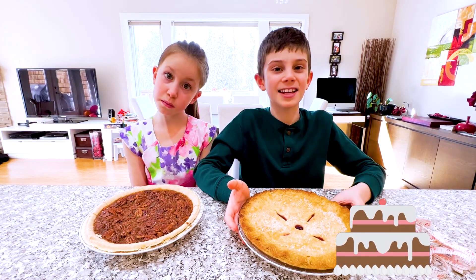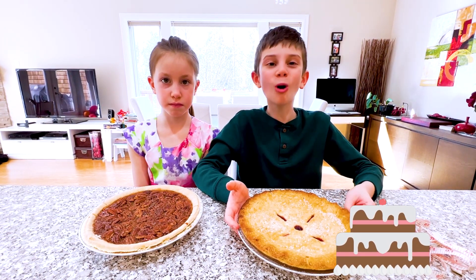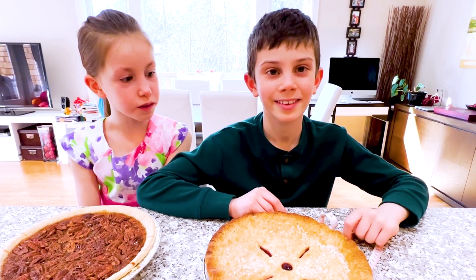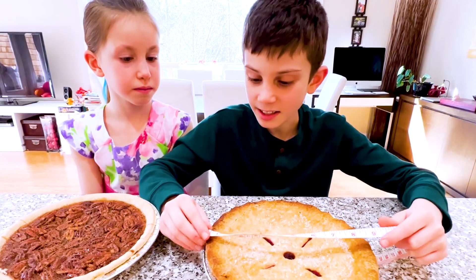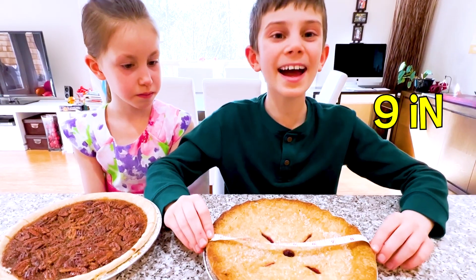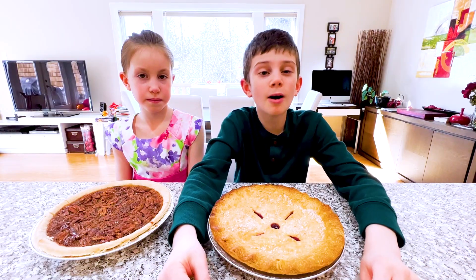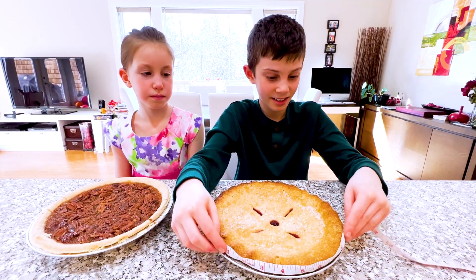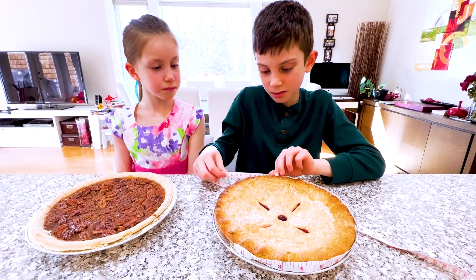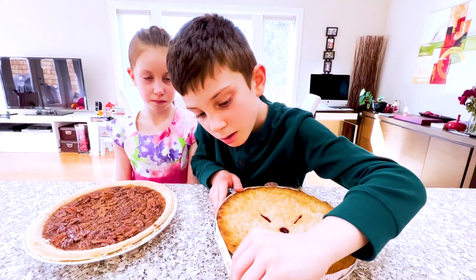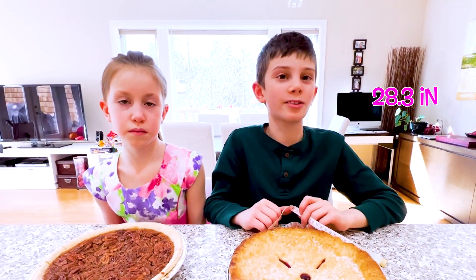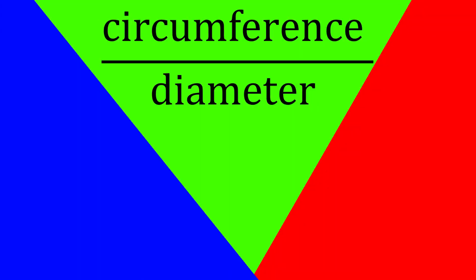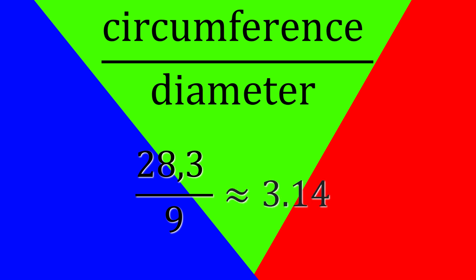What about cakes? As long as it's round, of course you can! What's the diameter of this cherry pie? Let's see — 9 inches! Now I'm going to measure the circumference of the cherry pie. It's about 28.3 inches. Let's divide circumference by diameter: 28.3 divided by 9 is about 3.14.